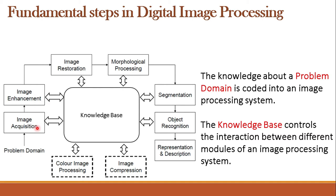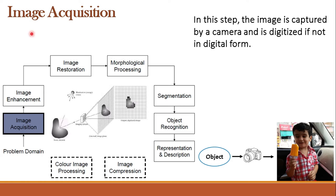The first stage is image acquisition. Acquisition means to acquire or to obtain, so image acquisition means to obtain the image — basically capturing an image using cameras. This acquisition is governed by the problem domain: the nature of the object under imaging defines the problem domain. For example, for capturing X-rays we need X-ray imaging, for bacteria and viruses we need microscopic cameras, and for surveillance we may need infrared cameras.